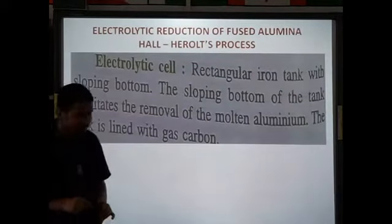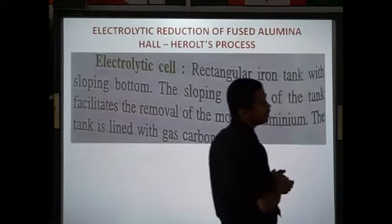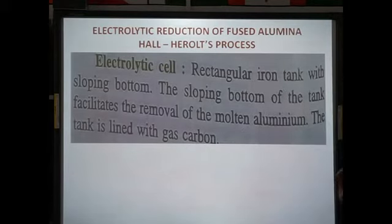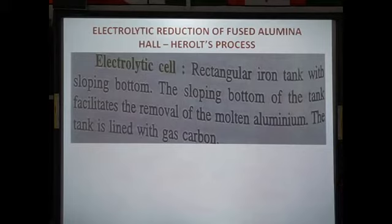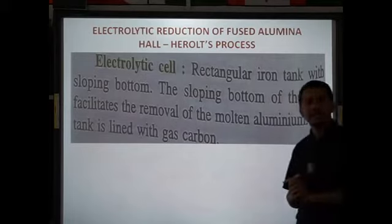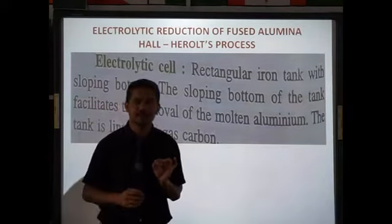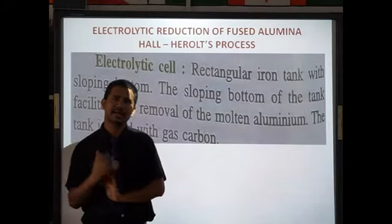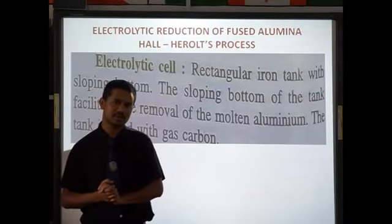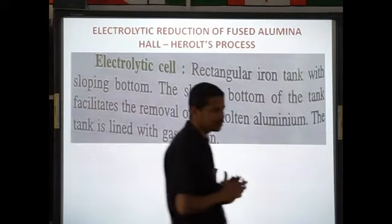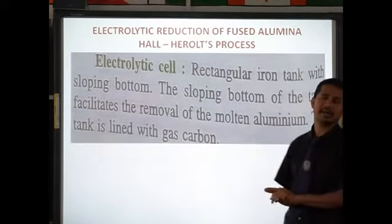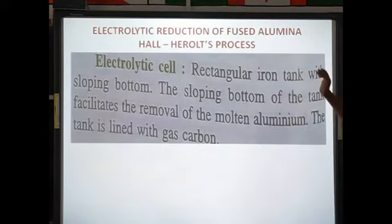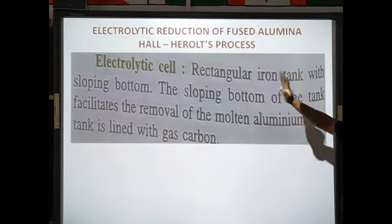The electrolyte for reduction of alumina is a mixture of molten alumina 20%, cryolite 60%, and fluorspar 20%. Cryolite makes up 60% because it enhances conductivity and reduces the fusion temperature to 950 degrees Celsius. Fluorspar is also added at 20%.